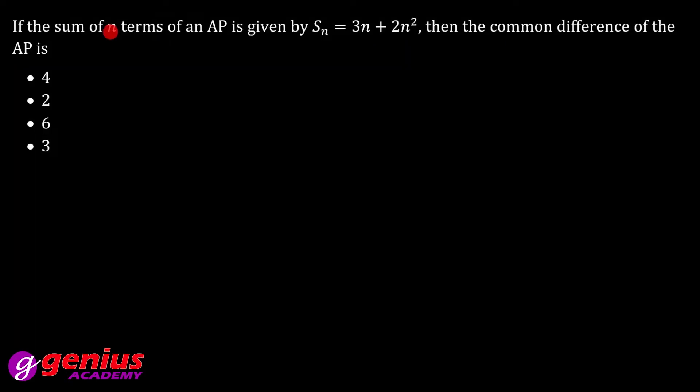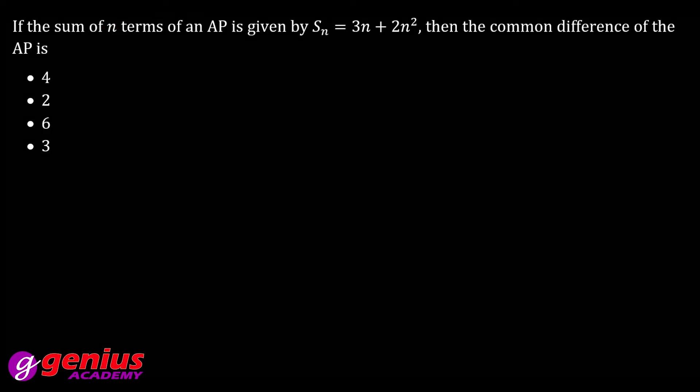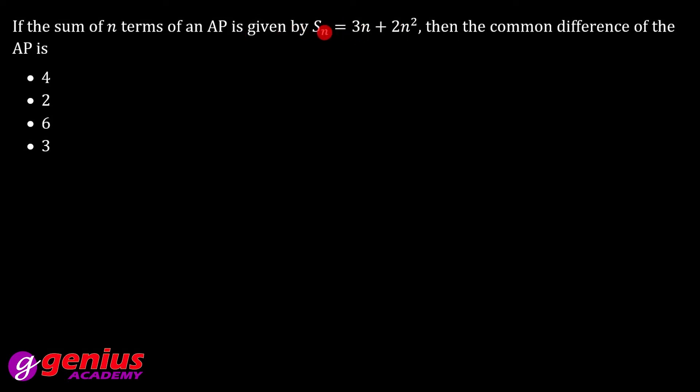Next question is this: if the sum of n terms of AP is given by Sn equals 3n plus 2n squared, then the common difference of the AP is what? Look, formula is d equals an minus an minus 1. This is the common difference formula. But you don't have an. So another formula is given in Sn form: an equals Sn minus Sn minus 1.